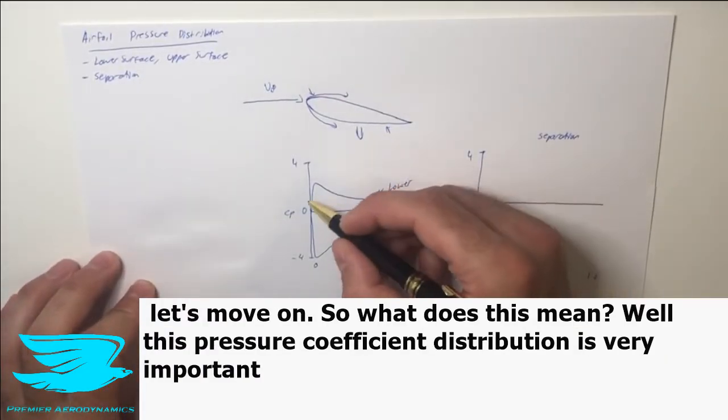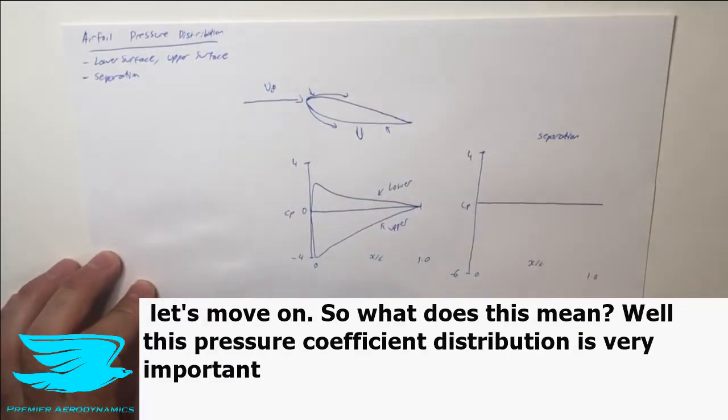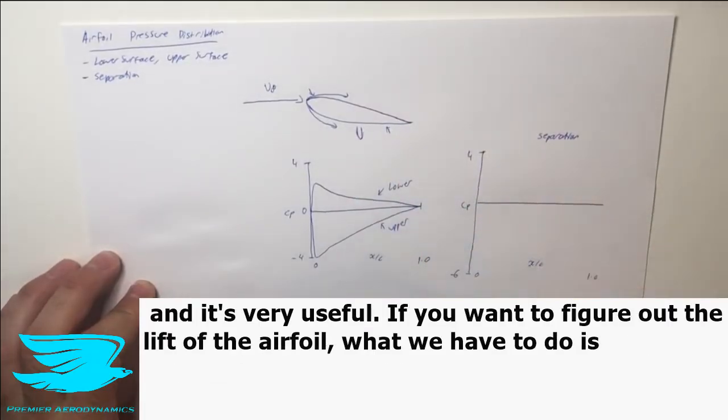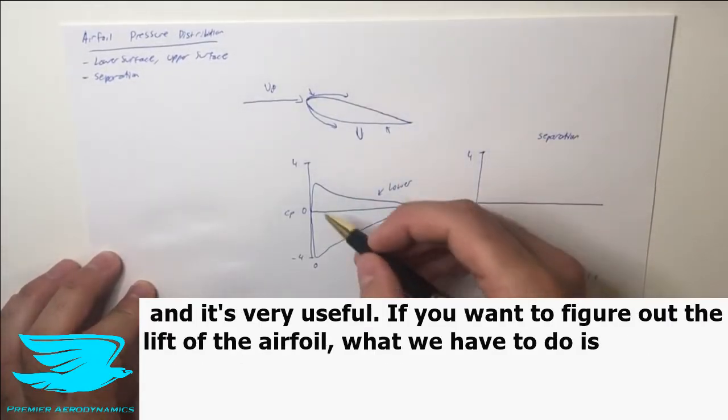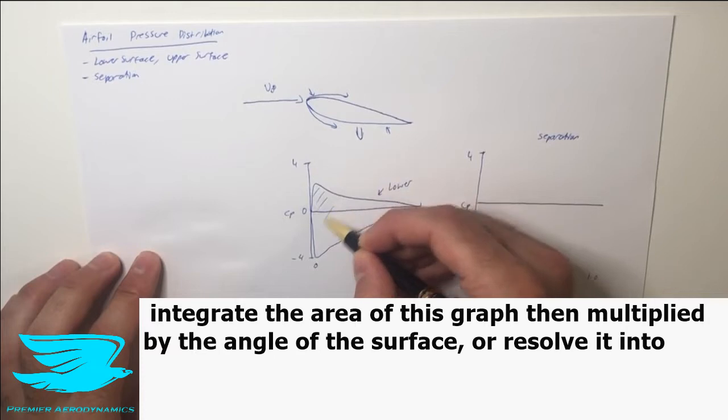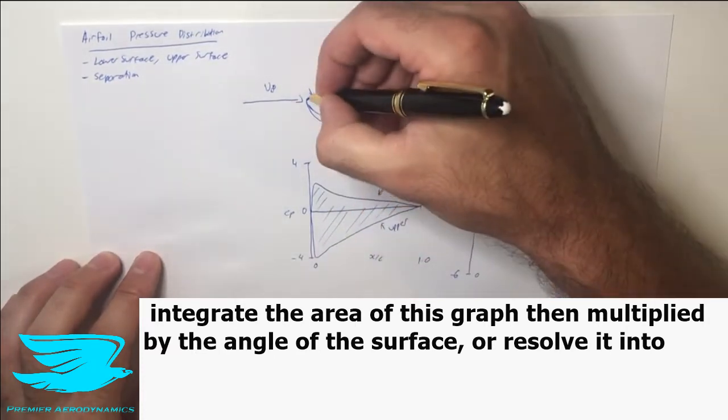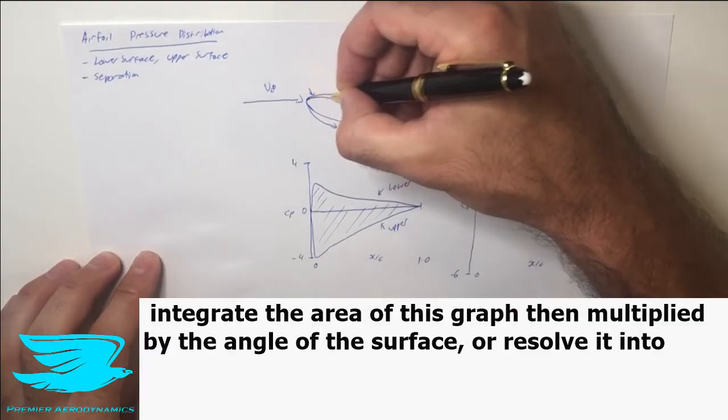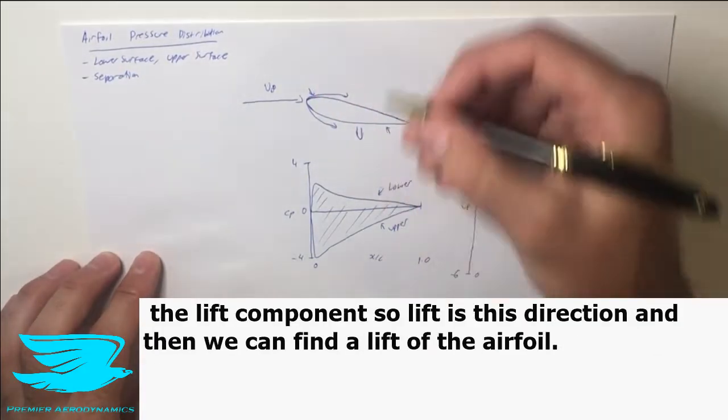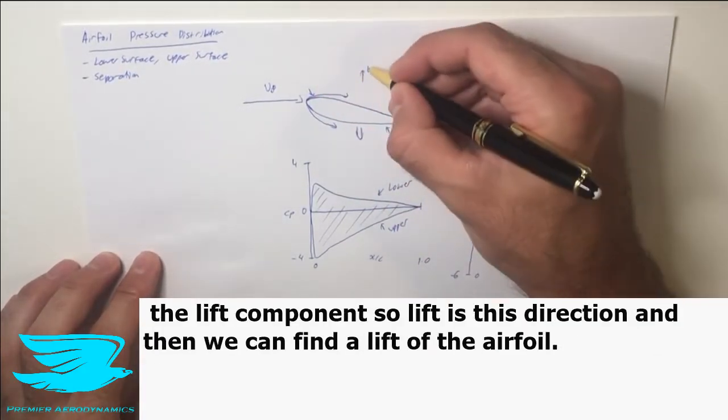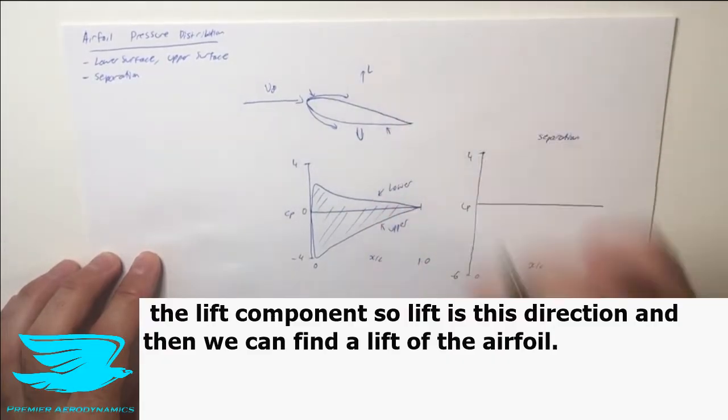So what does this mean? Well, this pressure coefficient distribution is very important and useful. If we wanted to figure out the lift of the airfoil, all we have to do is integrate the area of this graph, then multiply it by the angle of this surface to resolve it into the lift component, and then we can find the lift of the airfoil.